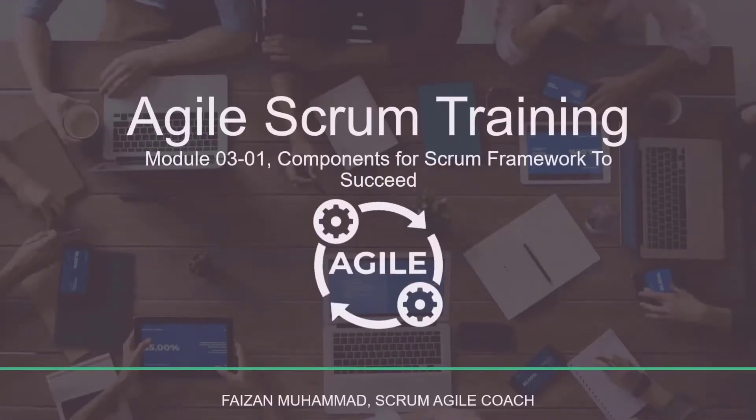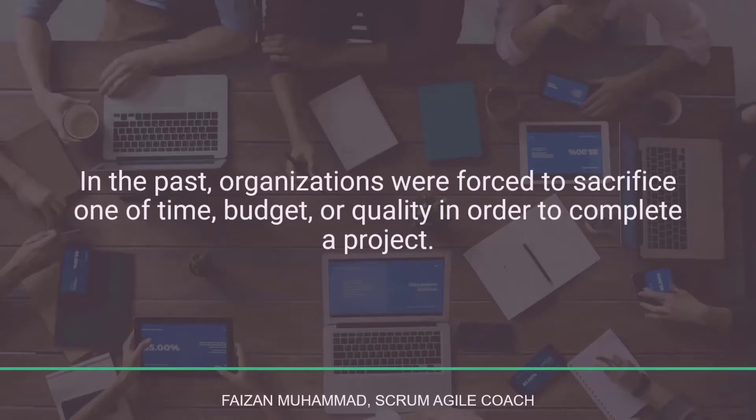Hello and welcome to this lesson. In this section we'll be talking about the scrum roles and the scrum team. The scrum framework is revolutionizing the classic triangle of project management. In the past, organizations were forced to sacrifice one of three major things: budget, time, or quality. However, with the scrum framework in place, a new triangle is emerging between budget, time, and functionality.